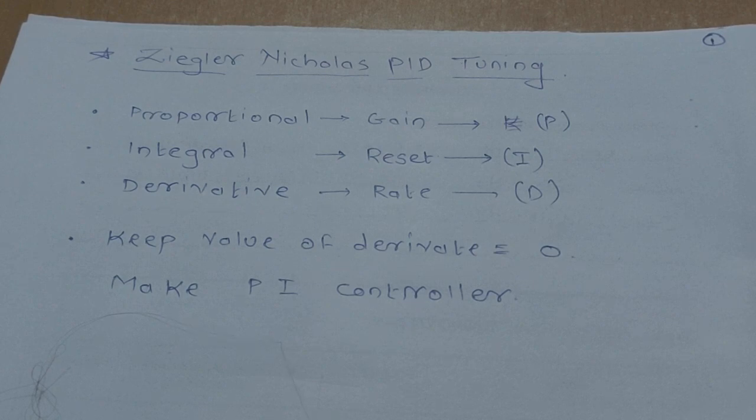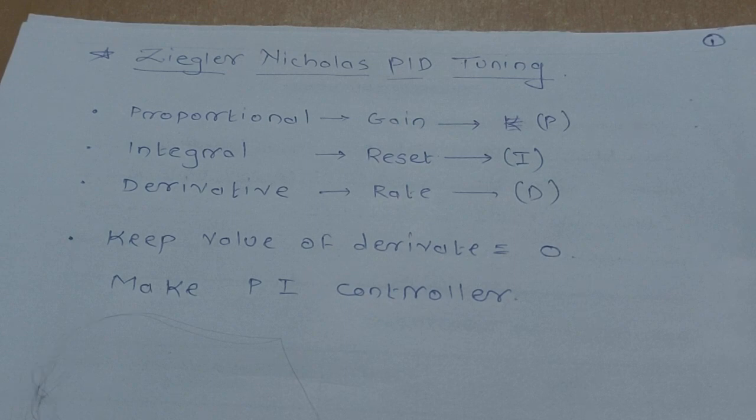If you want to tune the PID controller in a simple way, we generally put derivative as zero so that the PID controller becomes a PI controller. So we will see how to tune the PID controller by using PI parameters.